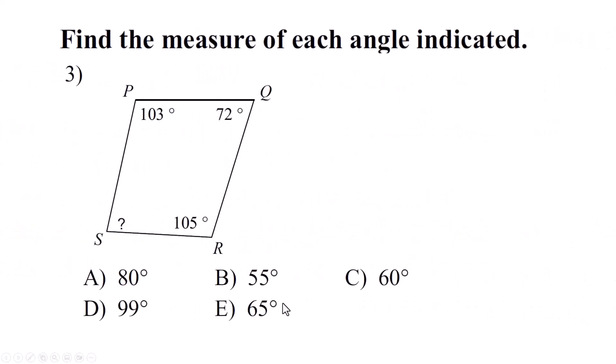Find the measure of each angle indicated so I need to know how big this angle is. Anything that is a closed figure that has four sides, all internal angles will add up to 360. Remember when all internal angles in a triangle added up to 180? The rule for four-sided figures is that it's 360. So just subtract all of those angles that you see from 360 and whatever is left is going to be your answer and that'll be 80.